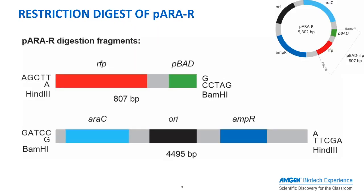In this lab, we will be digesting the PRR plasmid with two restriction enzymes, BAMH1 and HIN-D3, to produce two DNA fragments. The shorter fragment, at 807 base pairs, contains the PBAD promoter region as well as the RFP. The longer fragment, at 4,495 base pairs, contains the remaining three components of the plasmid.